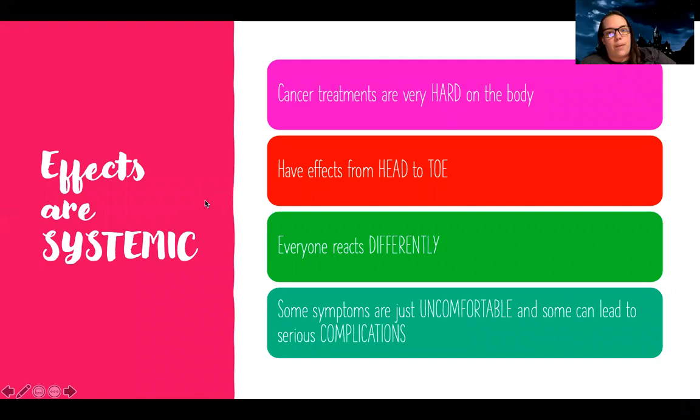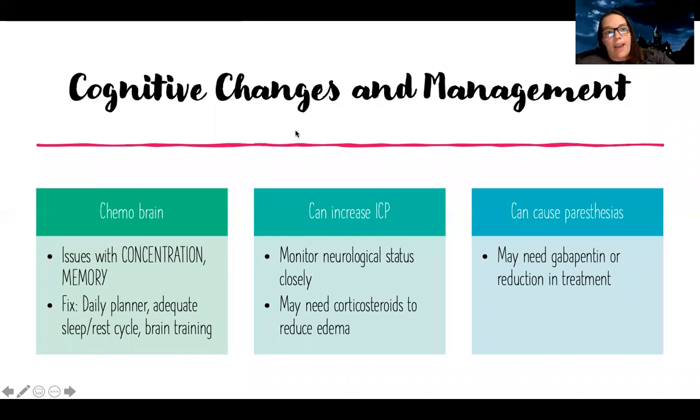Effects of chemotherapy and other cancer treatments are systemic. They're very hard on the body — they have effects head to toe and affect every area of the body. Everyone's going to react differently, so you need to be looking for a variety of things that can happen. Some symptoms will be just uncomfortable and some can lead to serious complications. I'll have a separate PowerPoint just covering cancer emergencies.